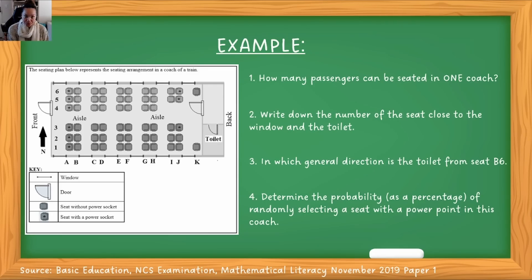Let's do a few more questions. Here is a seating plan representing a seating arrangement in a coach of a train. So picture this — this is now a coach of a train. North is again facing up. I've got the left side, which is front, and the right side, which is back. At the back we have the toilet, and there's a door going from the passenger section to the toilet. Then I can see windows on the left-hand side, and the doors. Here it says a seat without a power socket, and a seat with a star has a power socket — meaning a place where you can actually plug something in.